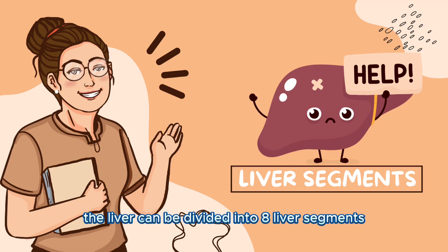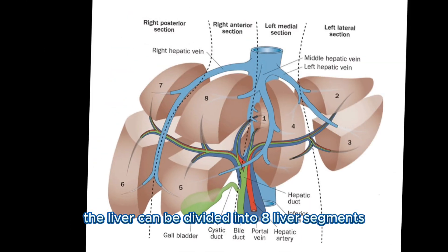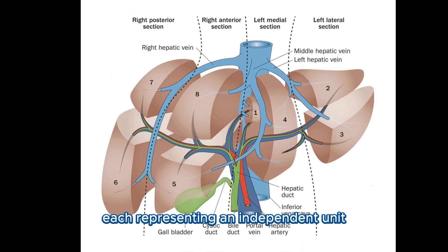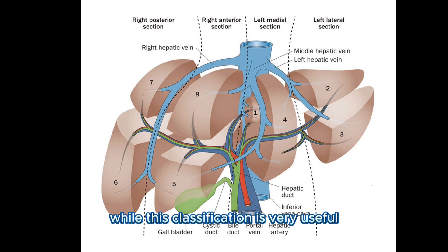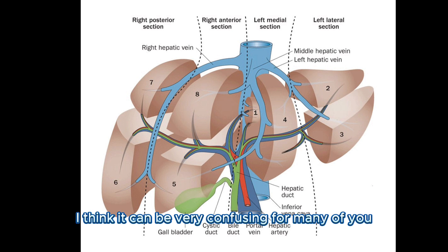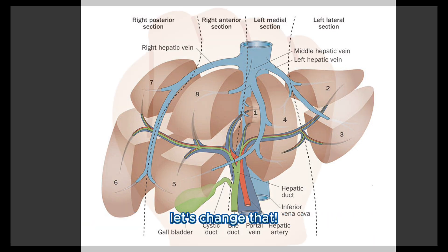The liver can be divided into 8 liver segments, each representing an independent unit and can therefore be resected without the other segments being damaged. While this classification is very useful, it can be very confusing for many of you. Let's change that.